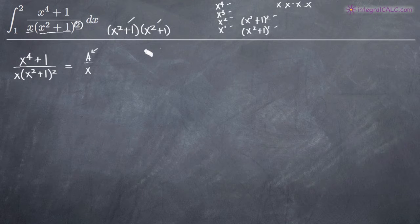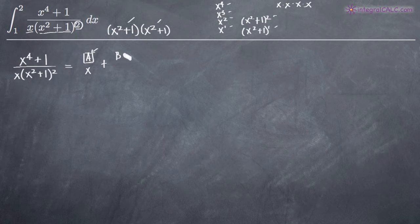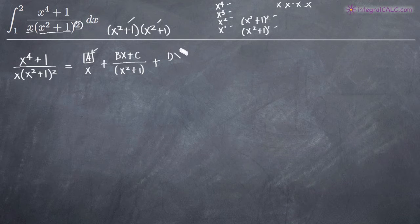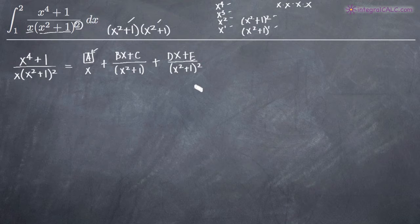Since these are both quadratic factors, when you have a quadratic factor you put two constants and a variable in the form bx plus c in the numerator. So we put bx plus c over the first-order factor x squared plus 1, and then dx plus e over the second quadratic factor x squared plus 1 squared. Now we've included both degrees of that repeated factor with quadratic numerator forms.